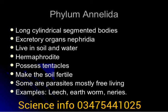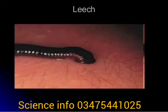Annelids are invertebrates having a closed circulatory system. Respiration takes place by diffusion. There are three classes: class Polychaeta (includes Nereis), class Oligochaeta (includes earthworm, Pheretima posthuma), and class Hirudinea (includes the medicinal leech).